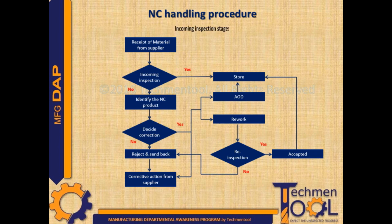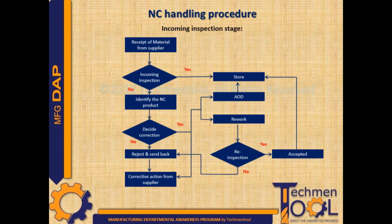In the rework path, in-house rework of the NC product takes place followed by re-inspection. After re-inspection, if it is accepted, then it will go directly to the store. If it is not accepted, then it will be rejected and sent back to the supplier.